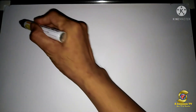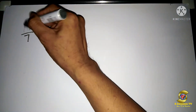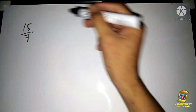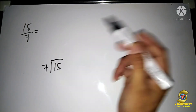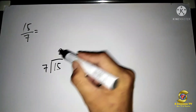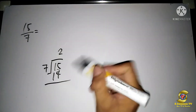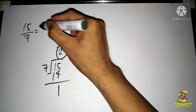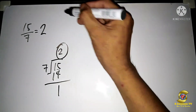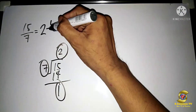Next is 15 over 7. Divide 15 by 7: the answer is 2, two times 7 is 14, then 15 minus 14 is 1. Our answer is 2 and one-seventh.